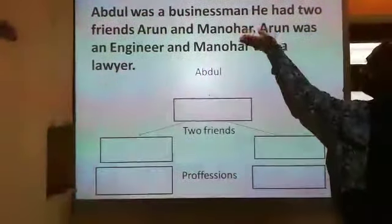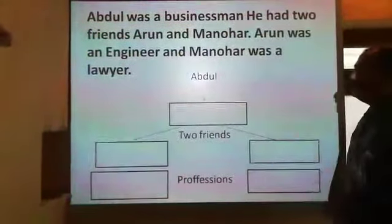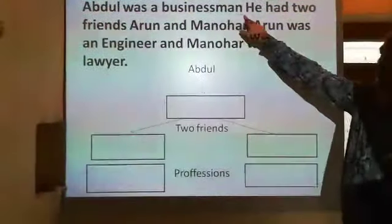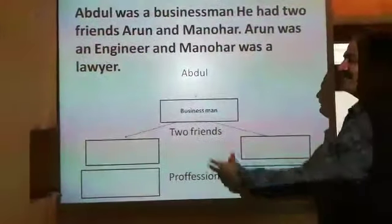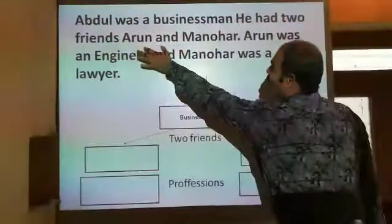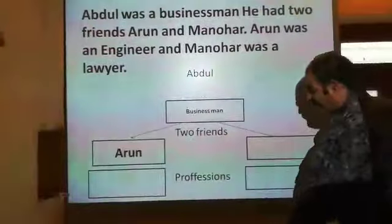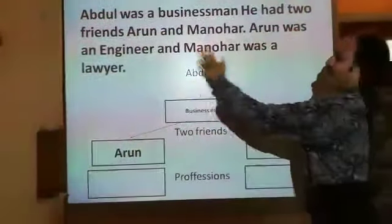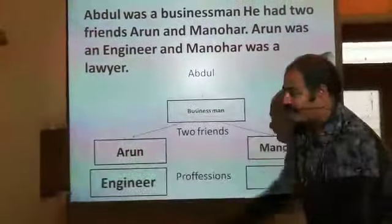You have to notice that there will be a paragraph and under that there are some boxes. What does the first box suggest? Abdul — what was Abdul? He was a businessman. So what you have to do is just mention 'businessman'. And he had two friends — who are they? Arun and Manohar. In the first column you can fill in Arun and the second one is Manohar. What are their professions? Arun was an engineer and Manohar was a lawyer.